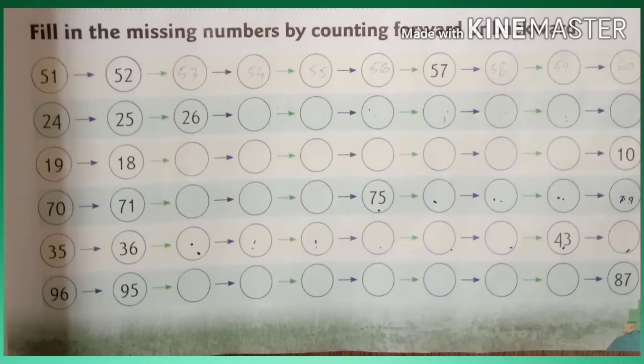Second one. Fill in the missing numbers by counting forward or backward. First one. 51, 52, then write 53, 54, 55, likewise you write and go.